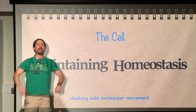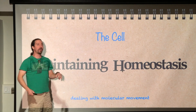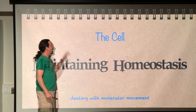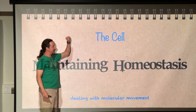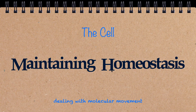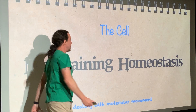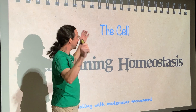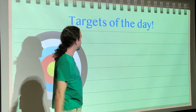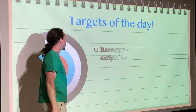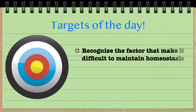Hello and welcome to this next episode of Tutor Tutors, continuing on the unit of the cell. Today we are looking at the specific characteristic of life that is maintaining homeostasis. The first target of the day is to recognize the factor that makes it difficult to maintain homeostasis.